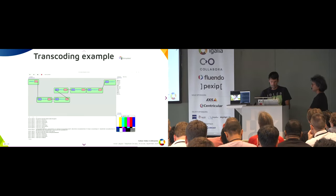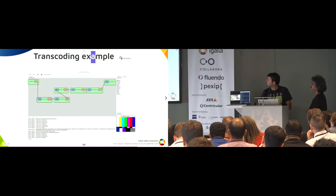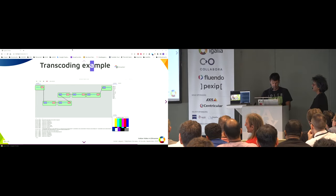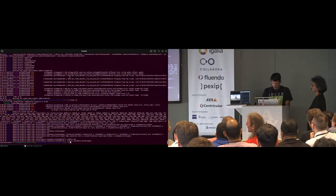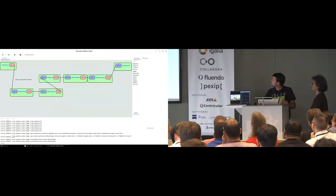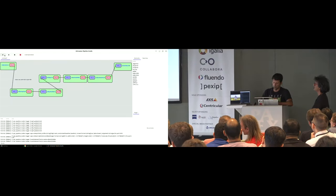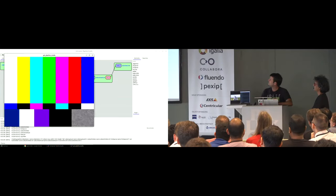Now for the demo. After navigating the full-screen issue, we can see the same pipeline running — Vulkan upload with a video test source. It is also possible to use a V4L source, but the quality is quite poor, so for the demo we're using the test source. This is the Vulkan transcoding example running live.